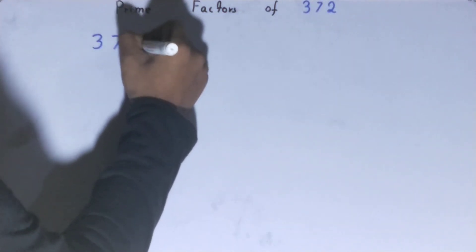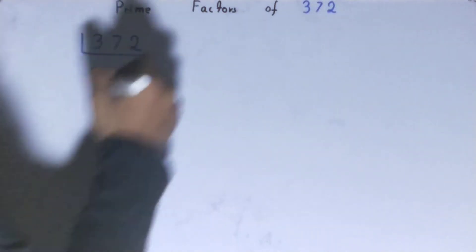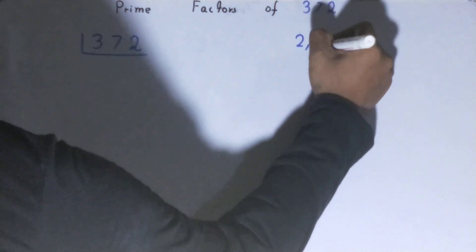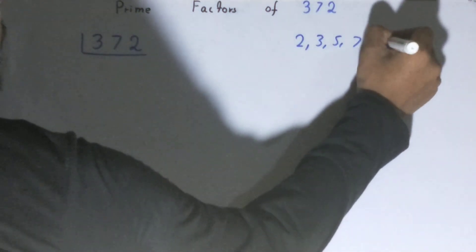And before solving it any further, you must have an idea about what prime numbers are. So your prime numbers are numbers that are divisible by one and themselves only, like 2, 3, 5, 7, and so on.